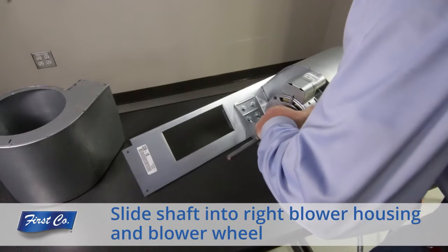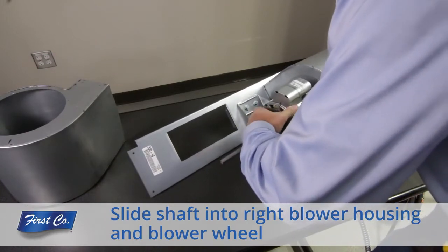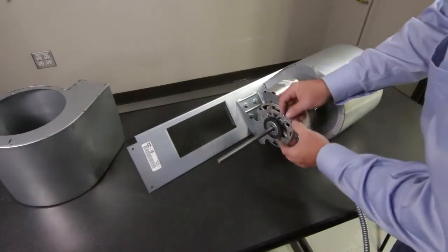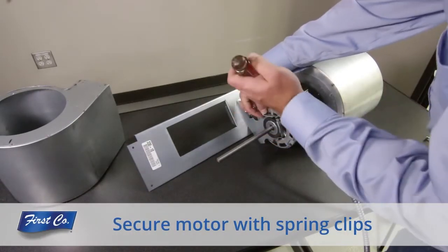Slide the shaft into the right side blower housing and blower wheel and center the motor on the motor mounting bracket. Secure the motor to the bracket using the spring clips removed earlier.